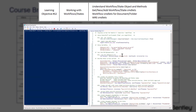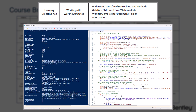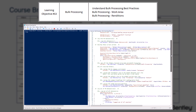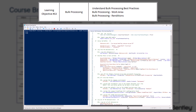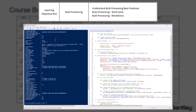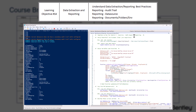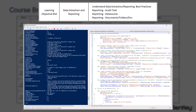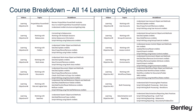Learning Objective 11 will cover working with environments, and the commandlets used to perform certain tasks. Learning Objective 12 will cover working with workflows and states, and the commandlets used to perform certain tasks. Learning Objective 13 will cover bulk processing, understanding best practices and some examples. Lastly, Learning Objective 14 will cover data extraction and reporting, best practices and some examples. We look forward to you joining us in these virtual training sessions. Thank you.